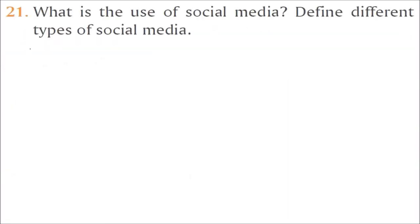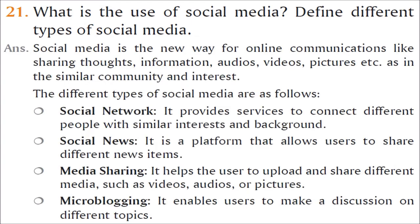What is the use of social media? Define different types of social media. Social - a human is a social animal. You have community, relatives, friends from school, college, or nearby people. Social media is a new way of online communication where you can share thoughts, information, audio, video, pictures. You can attach various things to your community, similar community, or people who interest you or you have common interest.